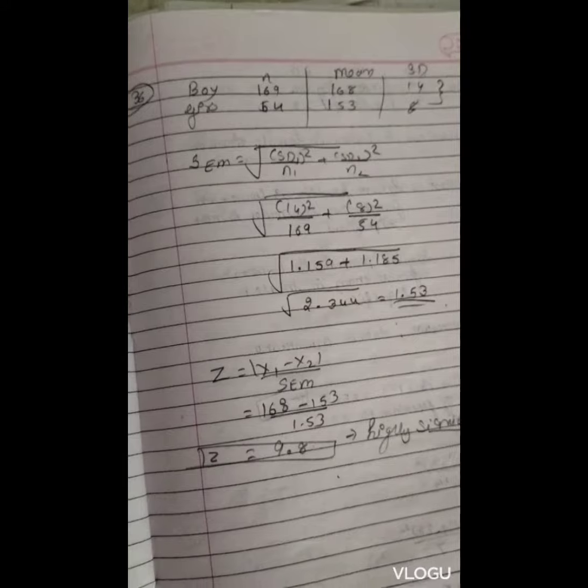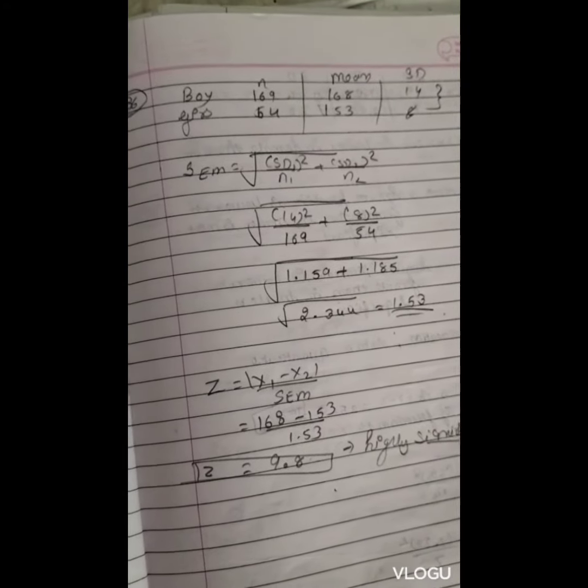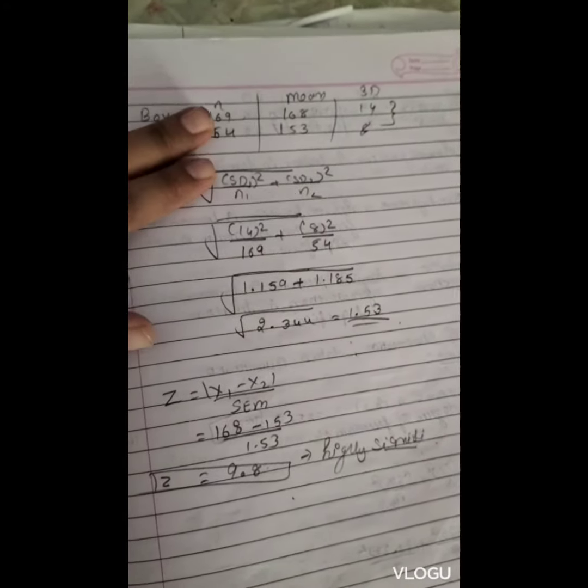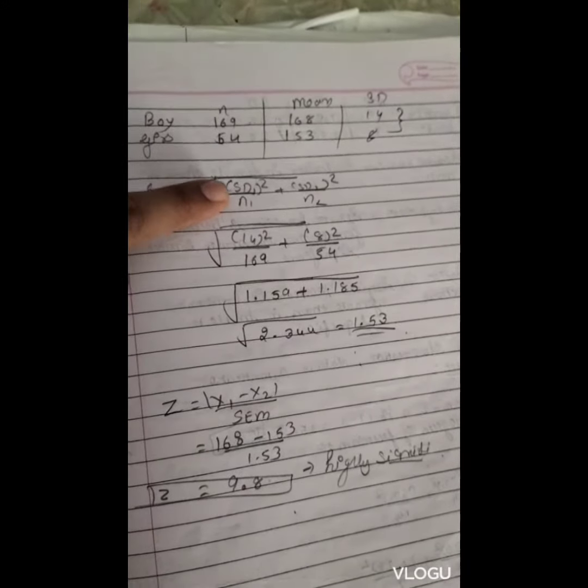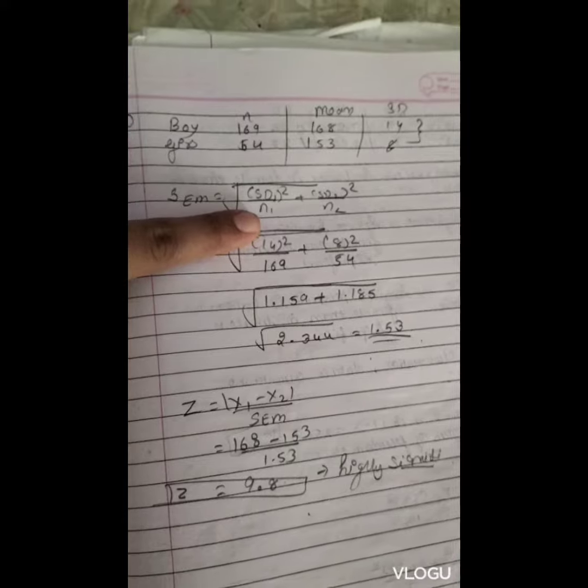SEM, because of two number of observations, we are going to use this formula: standard deviation whole square divided by n1 plus standard deviation 2 whole square divided by n2.